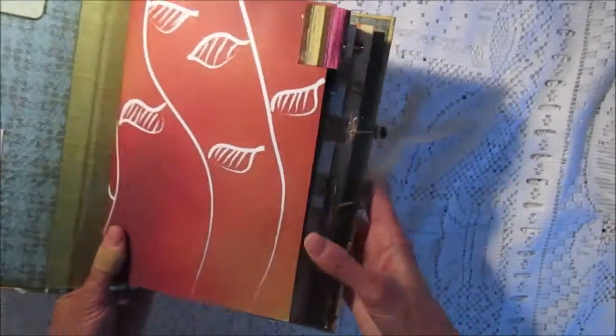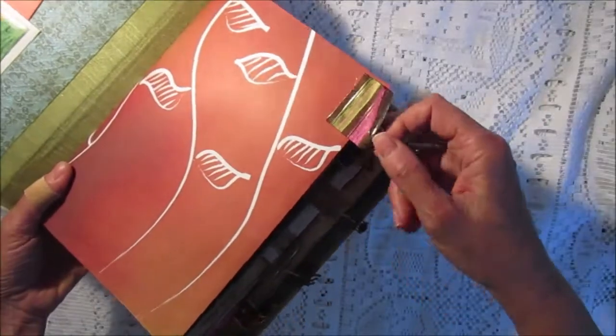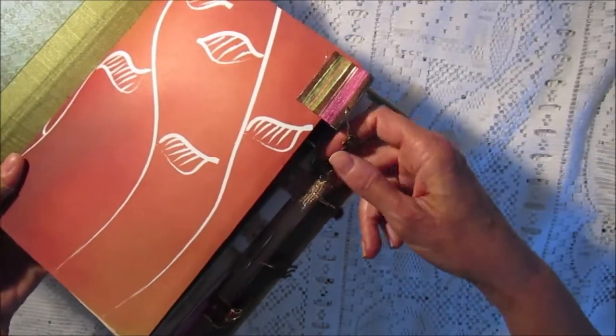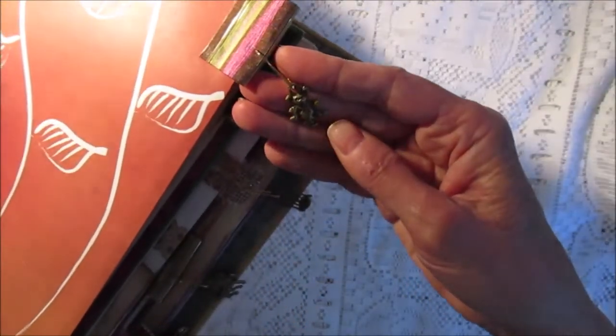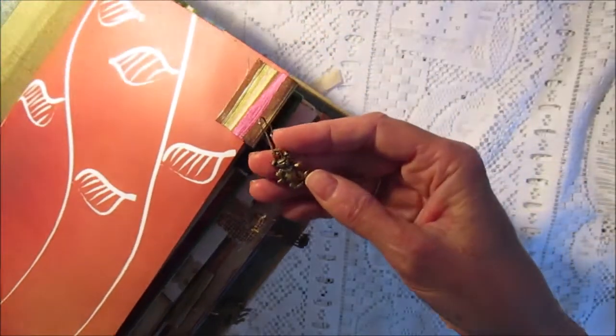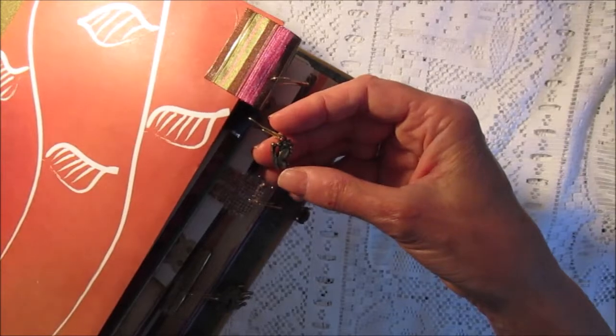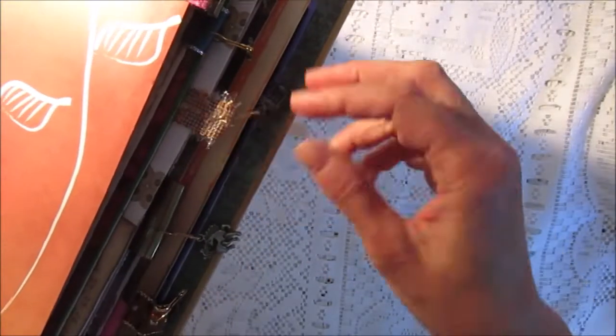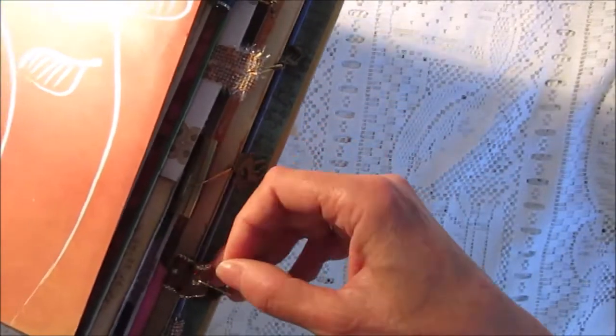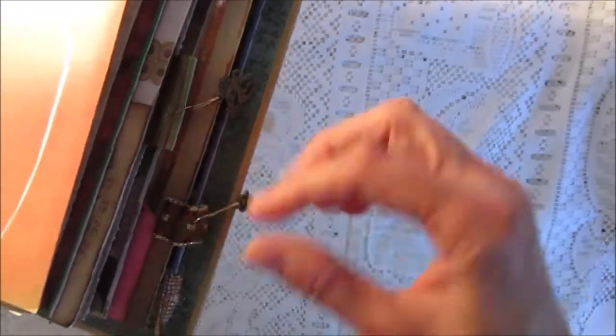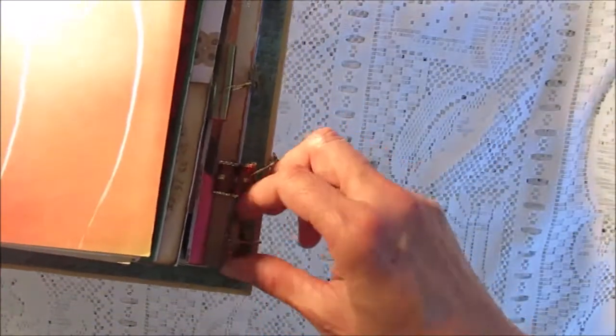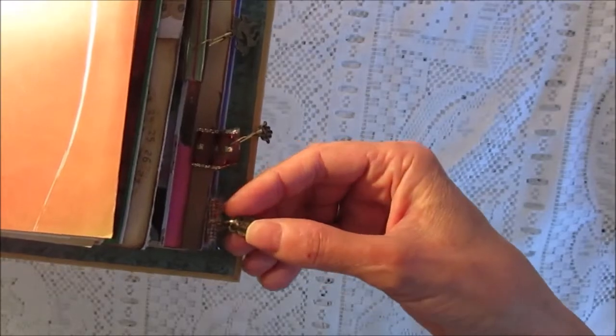On the inside I've got some ribbon tabs and each of the tabs has little charms. There's a little bear, I don't know if you can see that, a butterfly, a bottle opener, a horse, a hand, and a little heart.